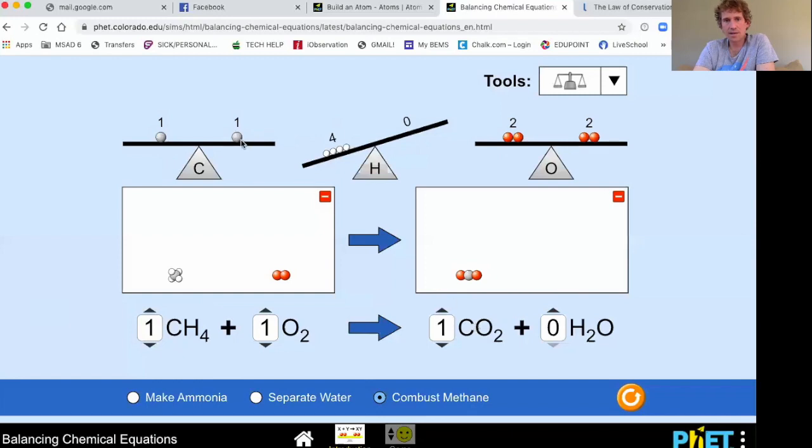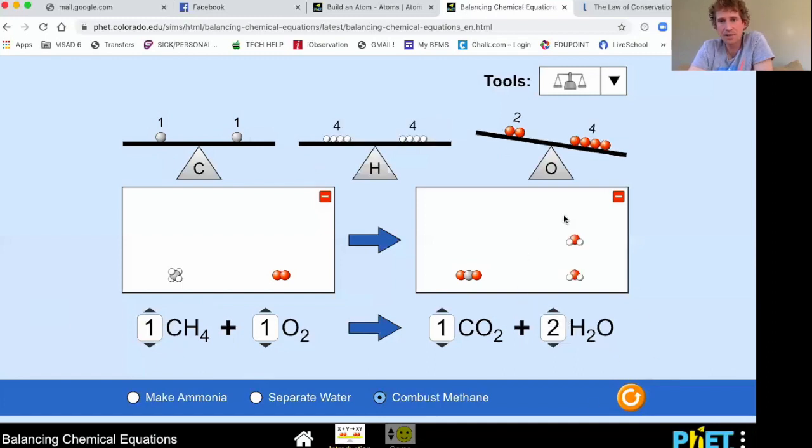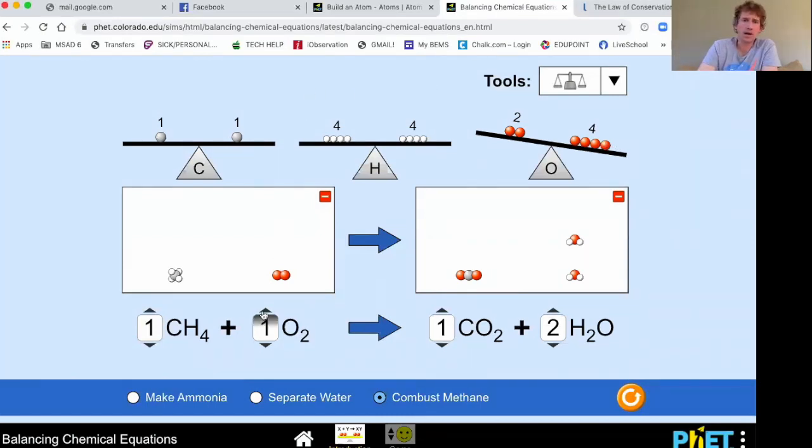But we need to add more hydrogens. We know we need four hydrogens because methane has four, so we're gonna have to at least have two water molecules. So now our hydrogens are balanced, but our oxygens are still imbalanced. So we got to add one more oxygen gas molecule to make it balanced.